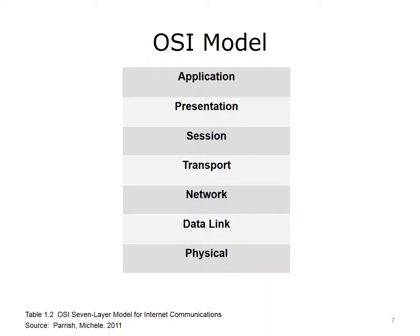In the late 1970s, the Open Systems Interconnection, OSI model, was created by the International Organization for Standardization. It is a seven-layer model that describes the processes that should take place for communication to occur between two devices on a network. The application layer is closest to the user, and the physical layer is closest to the network media, or medium. The media is the wired or wireless method that is used to connect network devices to each other.